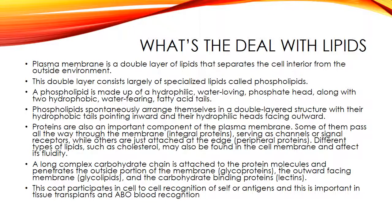The cytoplasm contains the cell's organelles and cytoskeleton. The ribosomes are the sites for protein synthesis in the cell. The endoplasmic reticulum transports substances from one part of the cell to another — the rough endoplasmic reticulum makes proteins. Carbohydrates and lipids are processed in the smooth endoplasmic reticulum. The Golgi bodies modify substances made in the endoplasmic reticulum and package them into granules for transport within or export from the cell.